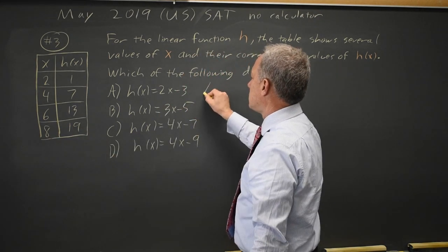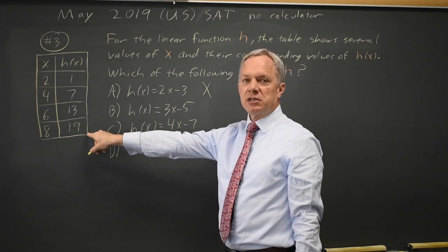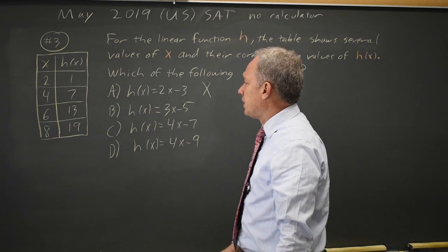that's not 19. Since the last point is not on the graph of choice A, A is wrong.